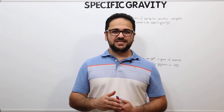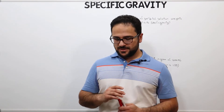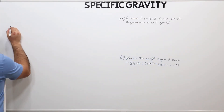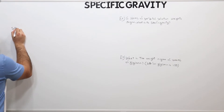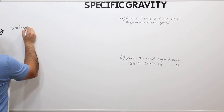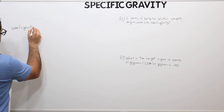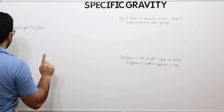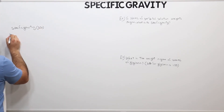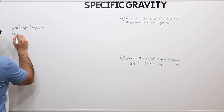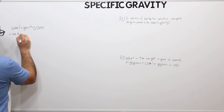There are a few things that I want you to be aware of. Let me refer to specific gravity as SG, just to make it simple. Number one: the specific gravity of water is one.